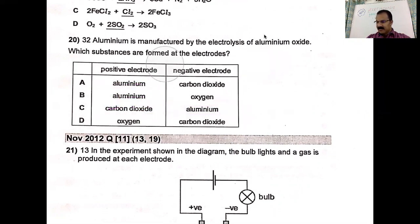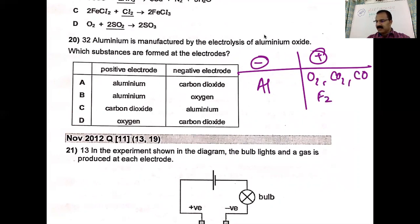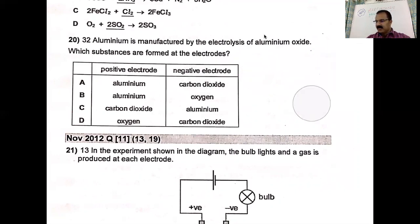At the negative electrode (cathode), we get aluminum. At the positive electrode (anode), you get oxygen, carbon dioxide, carbon monoxide, and even fluorine. These are the products during electrolysis of aluminum oxide for the preparation of aluminum.